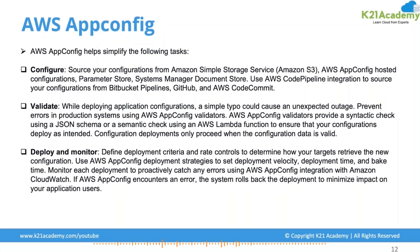While deploying application configuration, a simple typo could cause an unexpected outage. If there are any changes in your configuration, it could cause a lot of issues. To prevent errors in production, use the AWS App Config validator, which provides a syntax check using a JSON schema or a semantic check using an AWS Lambda function — to ensure that your configuration is deployed as intended.